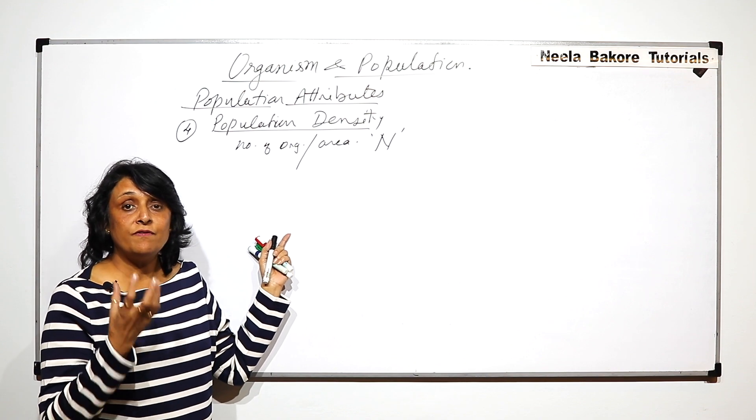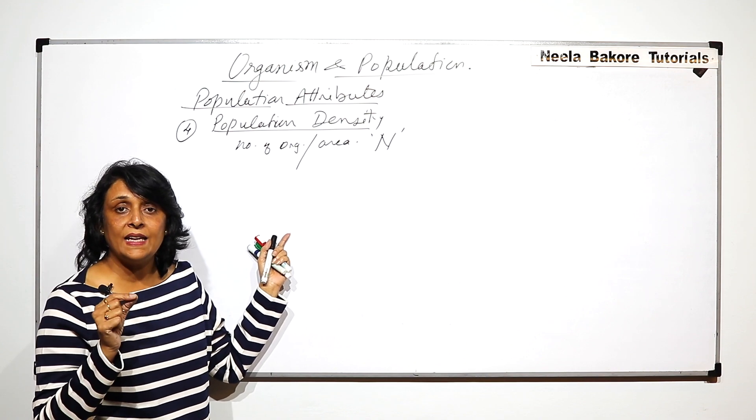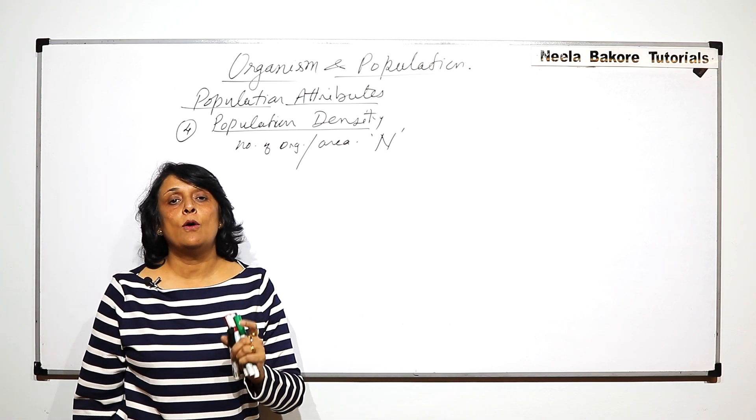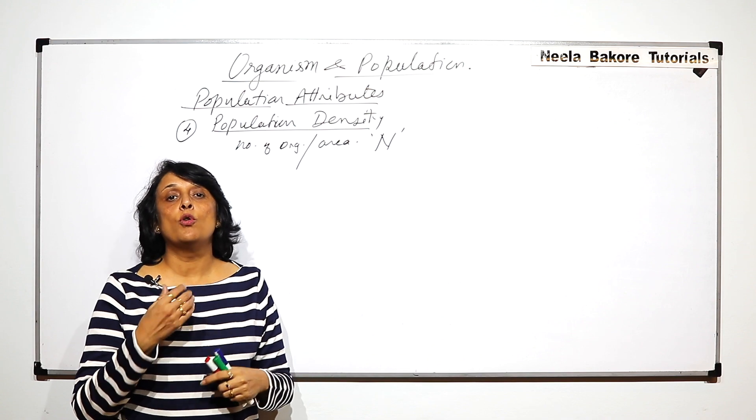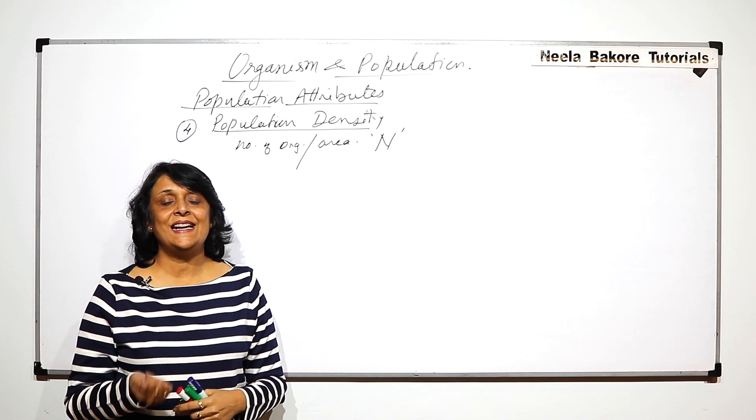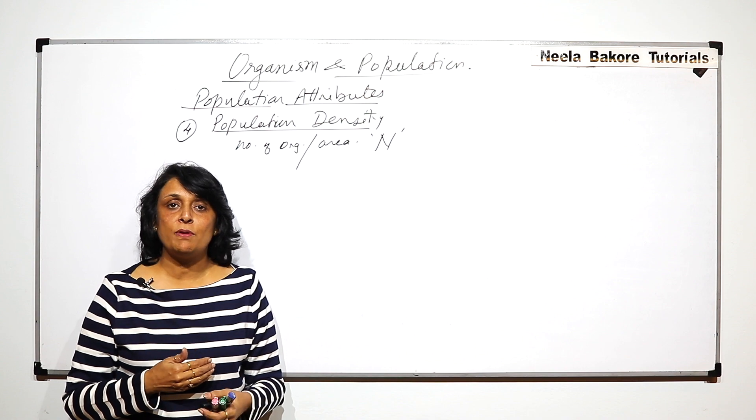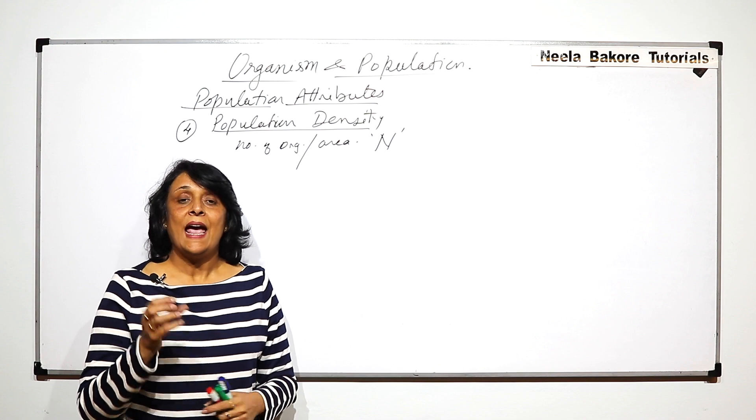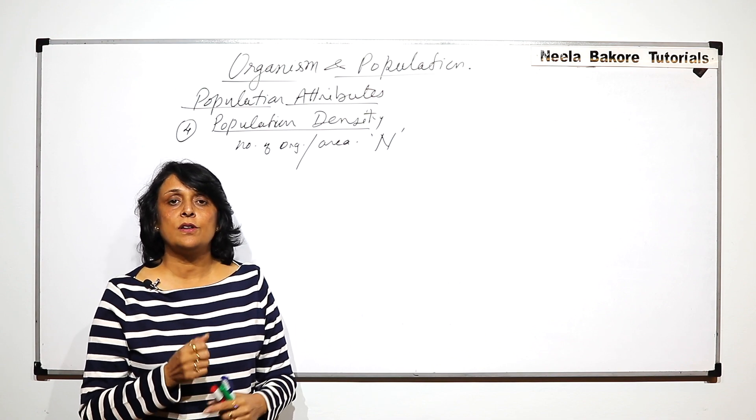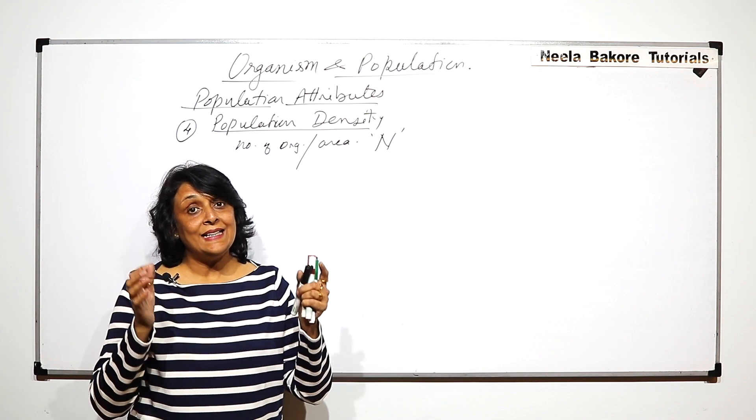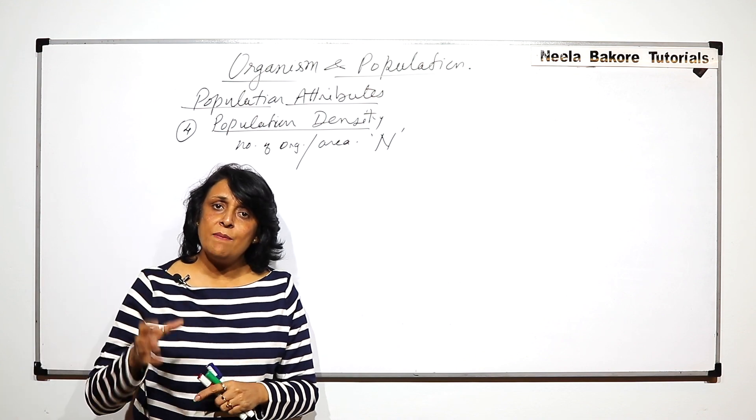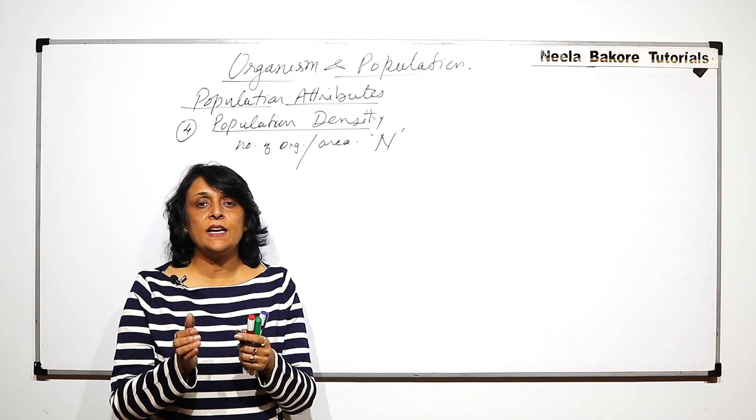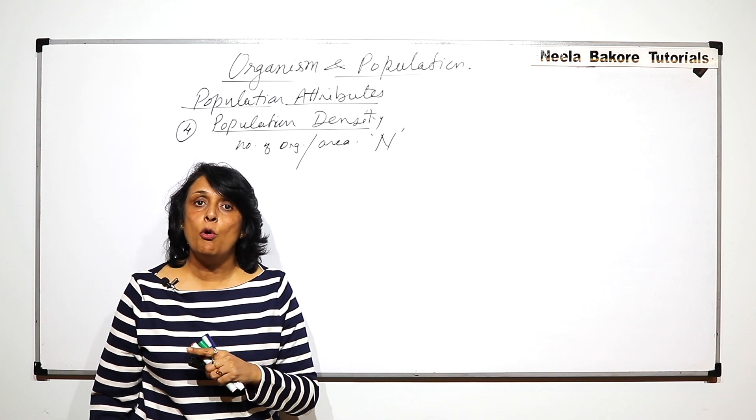How many organisms of a particular species are found in that unit area gives us the density. Based on this we find out which state is most densely populated and which is least densely populated. For example, if the area is a hundred square kilometers and there are only a thousand people staying, versus another place with the same area but ten lakh people, then per unit area the organisms would become more and that is what we mean by population density.